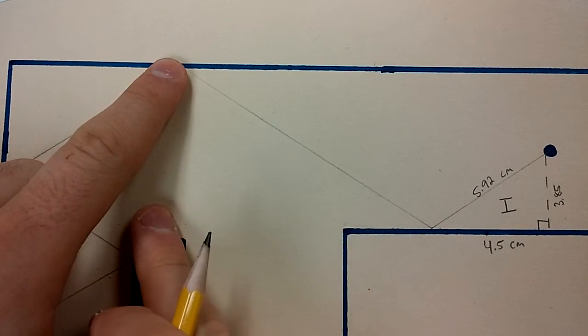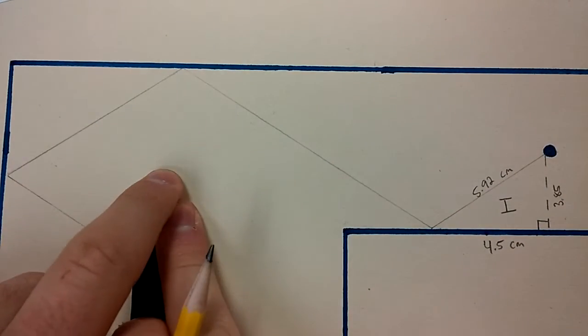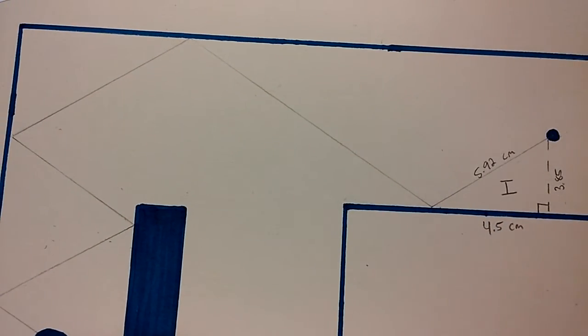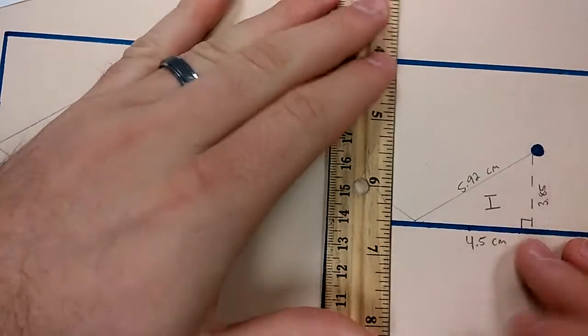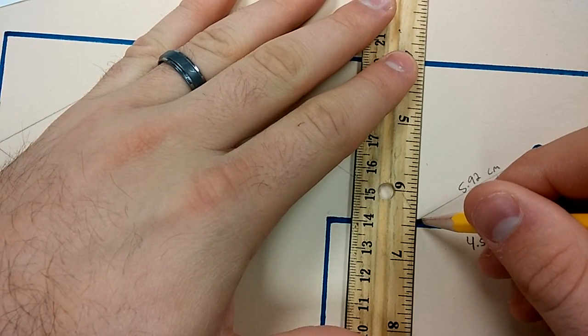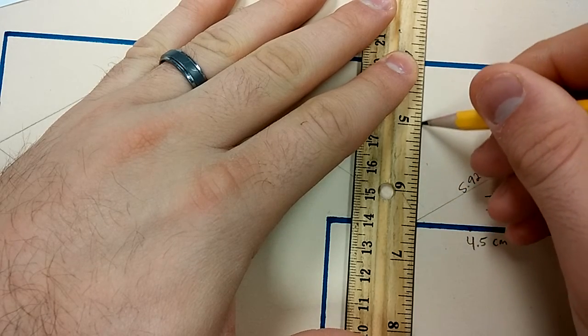Or you can draw it this way down here and draw a leg here and here to make a right triangle. It doesn't matter which one you choose. Just you don't need to do both. I find it easier to just use the walls that are given to you as part of the triangle. Less drawing for you.